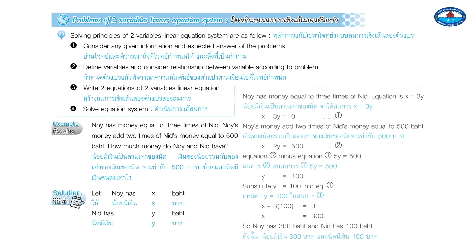Solution: Let Noi have x baht and Nid have y baht. Noi has 3 times Nid's amount: x equals 3y, so x minus 3y equals 0 (Equation 1). Noi's money plus 2 times Nid's equals 500: x plus 2y equals 500 (Equation 2). Equation 2 minus Equation 1 gives 5y equals 500, so y equals 100. Substituting y equals 100 into Equation 1: x minus 300 equals 0, x equals 300. So Noi has 300 baht and Nid has 100 baht.